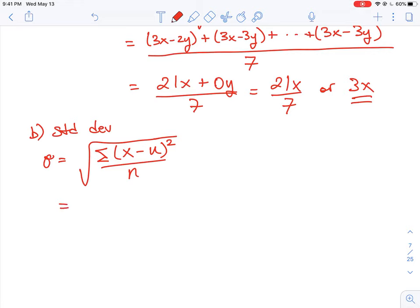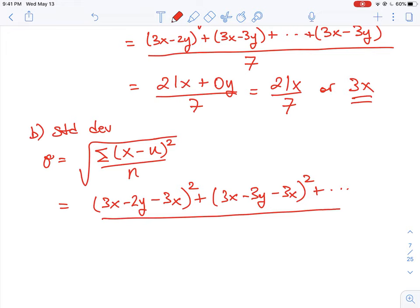We just start working out the math and see where this takes us. So we need to write out the sum of each of those elements. The first term here is going to be 3x - 2y, that's our first element, and then we subtract the mean from that, which is 3x, and then we square that. Our second term is going to be 3x - 3y, that's the next term in our set, and then we subtract 3x from that and take the square of that. We keep going until we run out of terms in our set, and then we end up dividing that by 7.